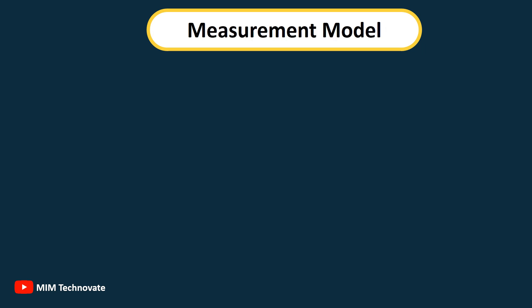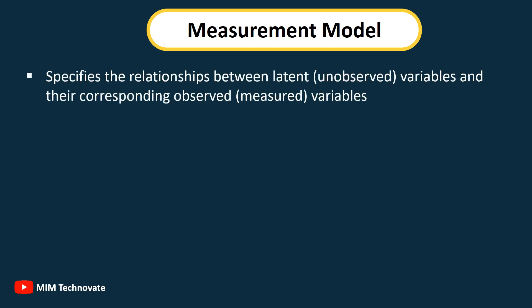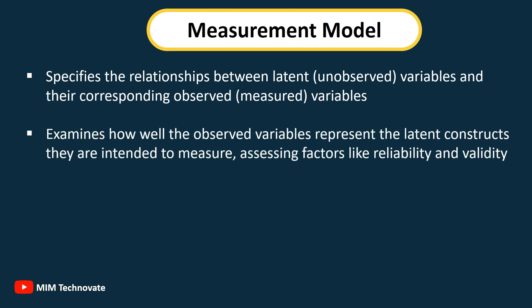The Measurement Model: Specifies the relationships between latent unobserved variables and their corresponding observed measured variables. It examines how well the observed variables represent the latent constructs they are intended to measure, assessing factors like reliability and validity.